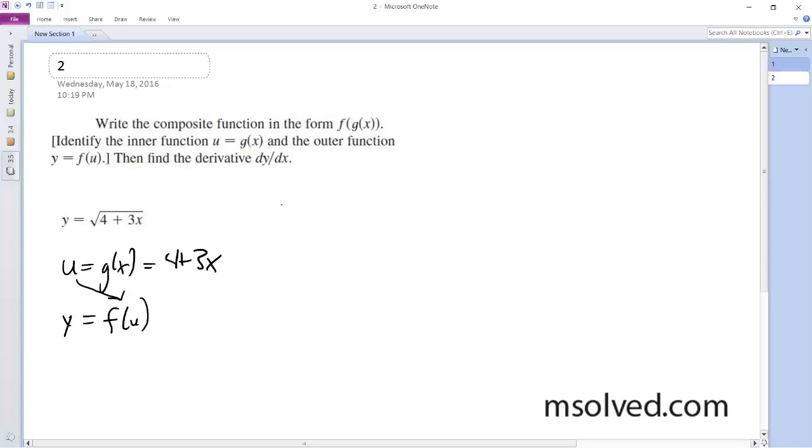And the derivative, so this ends up being f of u is equal to the square root of u, or u raised to the 1 half. So the derivative of this, of u, is equal to 1 half u raised to the negative 1 half.